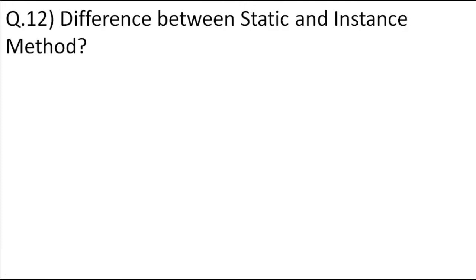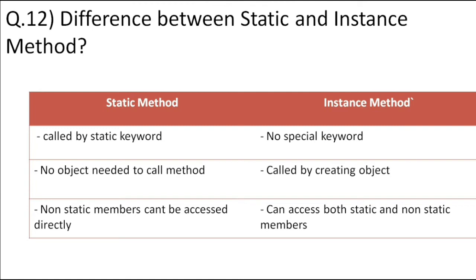What is the difference between a static method and an instance method in Java? Static methods are prefixed with the static keyword; no special keyword is used for instance methods. To call a static method, no object needs to be created; but for an instance method, an object must be created. Static methods cannot access non-static variables or methods directly, but instance methods can access both static and non-static members. Static is used when data is shared across all objects; instance methods perform functionality for a particular object.